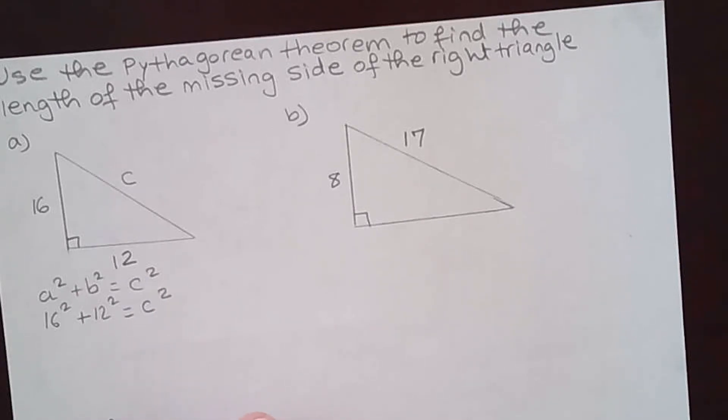If we use this as a, this becomes 16² + 12² = c². You're going to have to use your calculator to evaluate these numbers. 16² is 256 and 12² is 144 and that's equal to c².